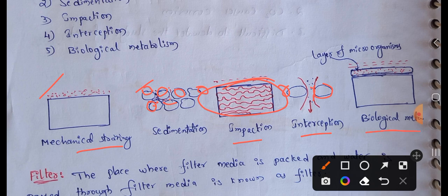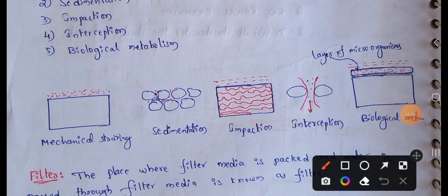In biological metabolism, the filter media develops a layer of microorganisms. This layer provides biological activity — it is a gelatinous layer where biological activity is at its highest. This layer is also called the 'dirty skin,' which contains impurities and microorganisms.